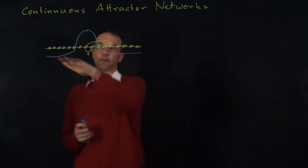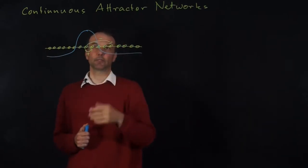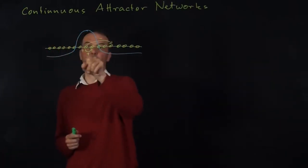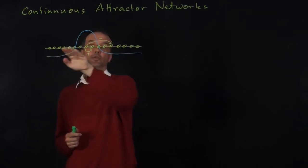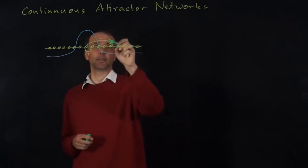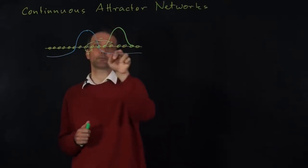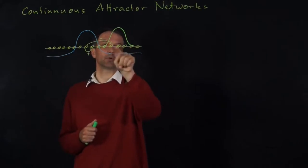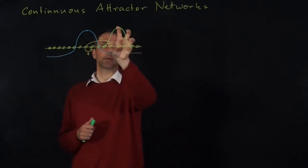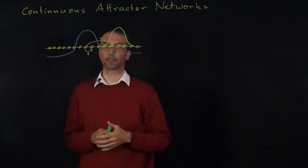If we have a sheet of neurons laterally connected with this connectivity and a certain dynamics, this field will develop one blob of activity. The blue line here indicates the connectivity for one particular unit, but all units share the same connectivity — you just shift this kernel left and right. There will be one blob of activity that can be at any location because the connectivity is completely shift-invariant. This is what we know from dynamic neural field theory.